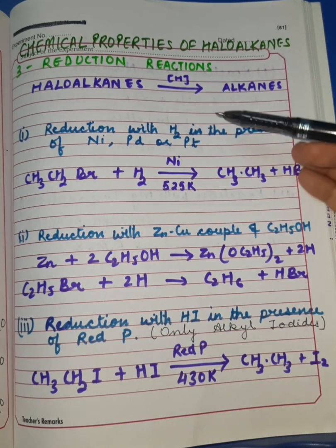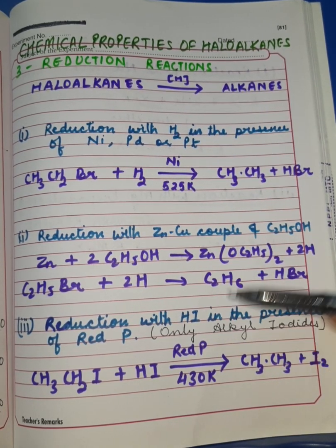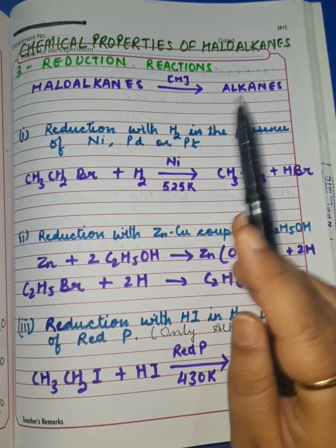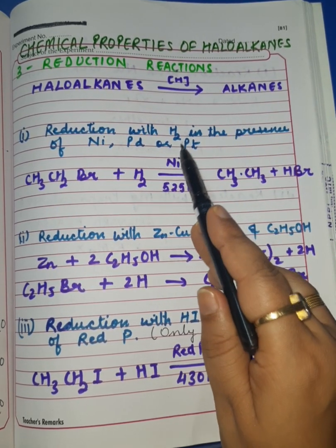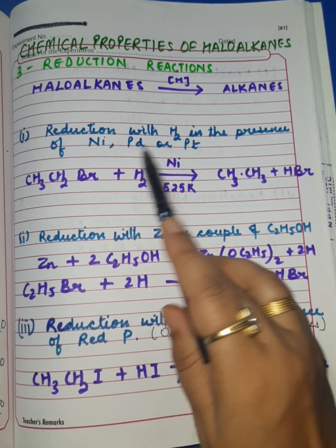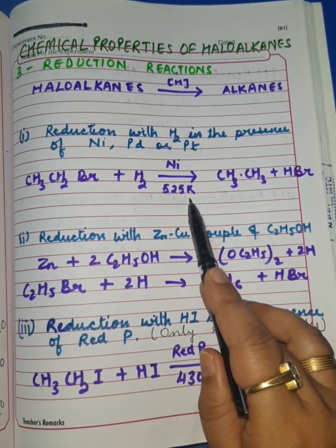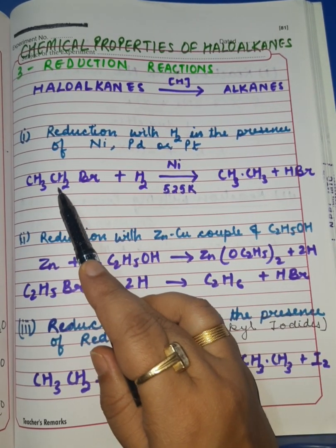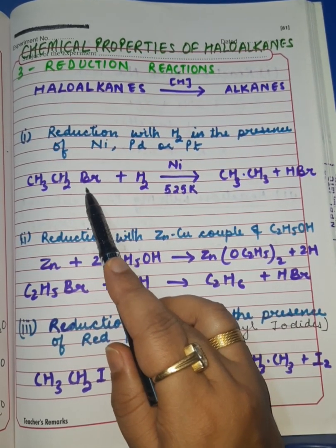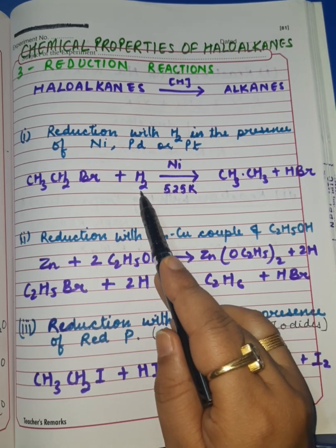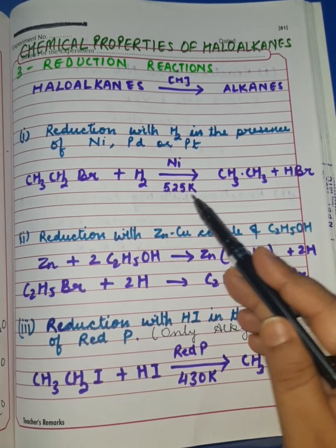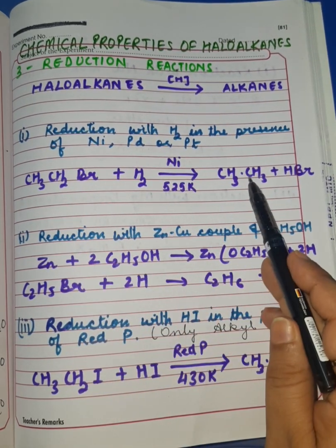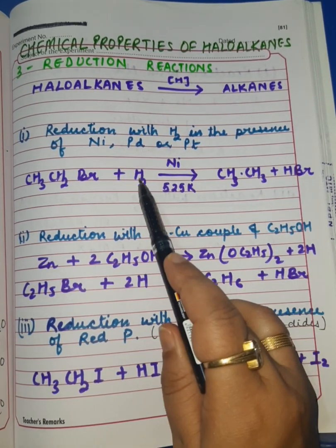The first is reduction with hydrogen gas directly, not nascent hydrogen. Remember, hydrogen gas in the presence of nickel, palladium, or platinum at their specific temperature, 525 Kelvin. Whatever haloalkane you are going to reduce, you react with hydrogen gas directly in the presence of nickel at the specific temperature, where haloalkanes get reduced to respective alkanes along with the formation of HBr.